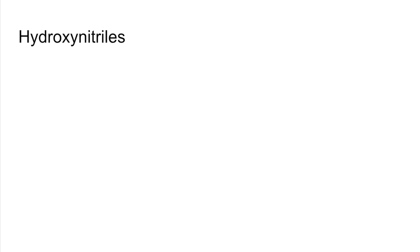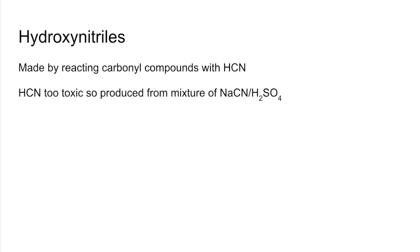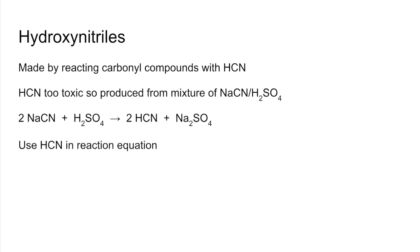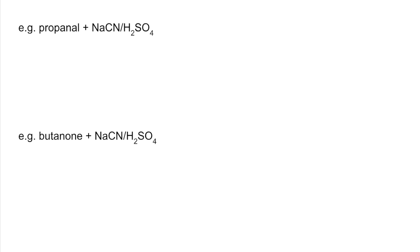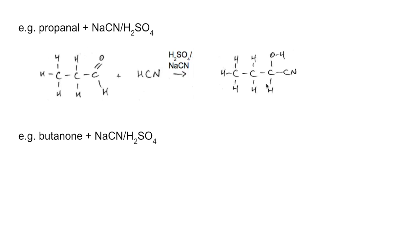Moving on to hydroxynitriles. They are made by reacting carbonyl compounds — aldehydes and ketones — with HCN (hydrogen cyanide). Because HCN is too toxic to use directly, we use a mixture of sodium cyanide and sulfuric acid, which generates HCN in situ. The mechanism is nucleophilic addition. Starting with propanal: the H goes onto the oxygen and the CN extends the carbon chain. The product has four carbons with a hydroxy group on carbon two — so it's called 2-hydroxybutanenitrile.